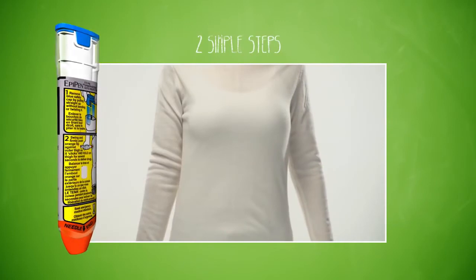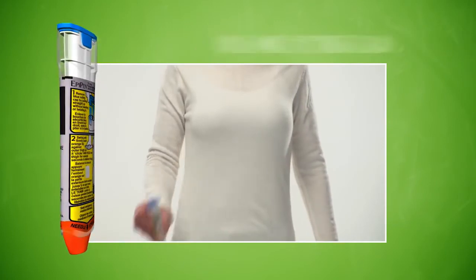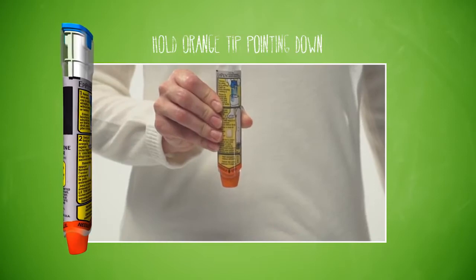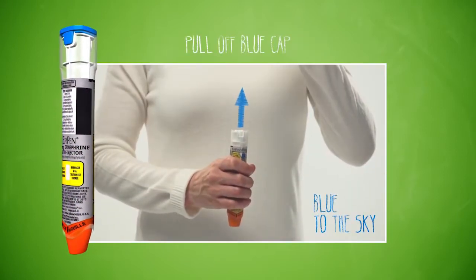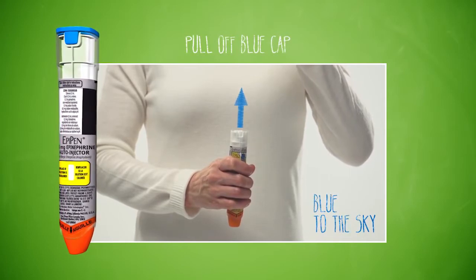EpiPen is administered in two simple steps. Hold EpiPen with the orange tip pointing down. Blue to the sky. Remove the blue safety cap by pulling straight up without bending or twisting it.